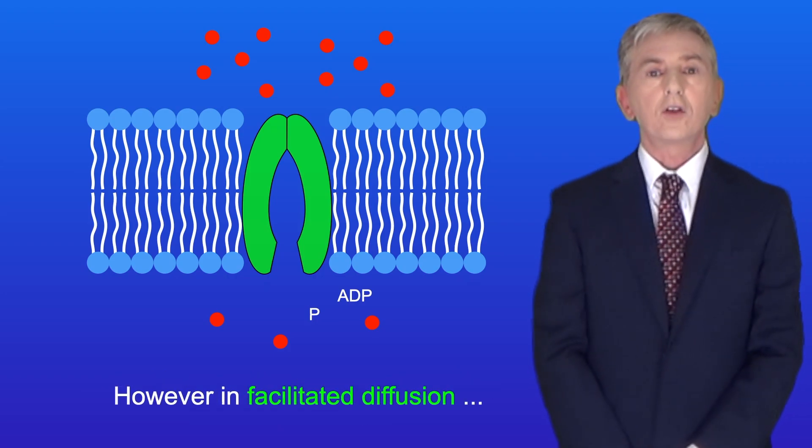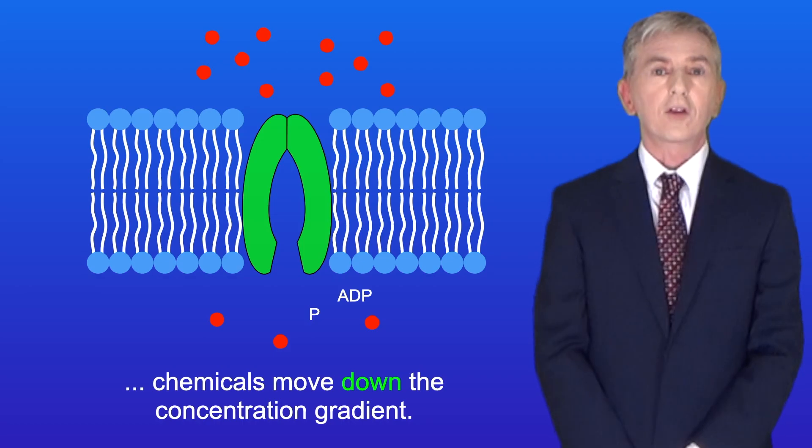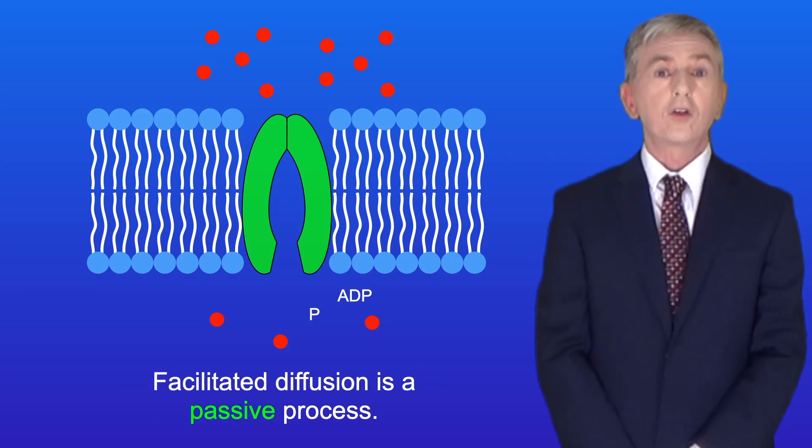However, in facilitated diffusion, chemicals move down the concentration gradient and facilitated diffusion is a passive process.